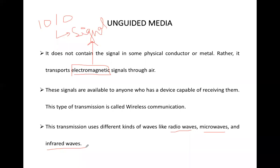What is common in both guided and unguided media? In both cases, data is converted into the form of a signal. The difference is: in guided media the signal will be electrical or light, but in unguided media the signal will be in the form of electromagnetic waves — which can be of three types: radio waves, microwaves, and infrared.